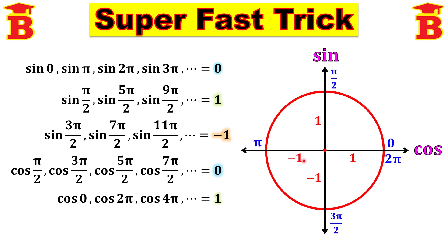On the negative side, the value is minus 1. On the negative side we have the angles pi, 3 pi, etc. So for those the value is minus 1: cos(pi) = -1, cos(3pi) = -1, and so on.